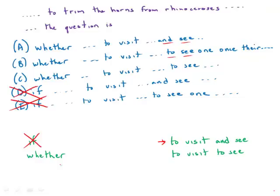What happens in fact is people make a visit to the game reserve expressly for the purpose of seeing the rhinoceros. Okay, so the relationship is one of purpose and to express this relationship of purpose we need to say to visit to see. So to visit and see is incorrect here. It doesn't capture the logic of the situation. So the and is wrong. So to visit to see. That is correct.